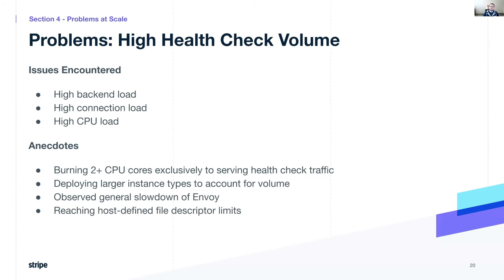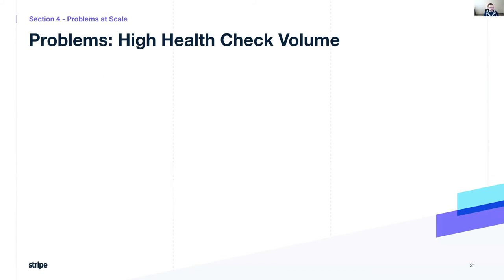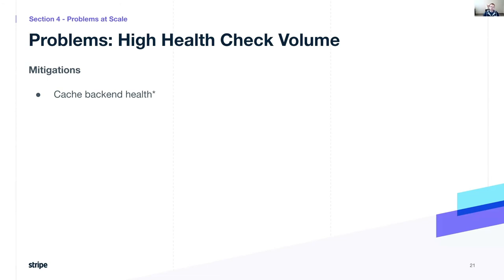We've also seen hosts reaching their file descriptor limits because of the number of connections created for health checking — this has a real impact on live traffic and other host functions. So what are the mitigations? One option is to cache the backend health. There are two types of caching here: traditional caching where the response from the backend health check service is cached for some duration, and then active health checks pass through to the application again once it expires — this reduces load but we may still see spikes as the cache expires. Then there's the internal cluster caching approach that Stripe uses, which has better semantics and never overwhelms the backend service since traffic doesn't spike as the cache expires.